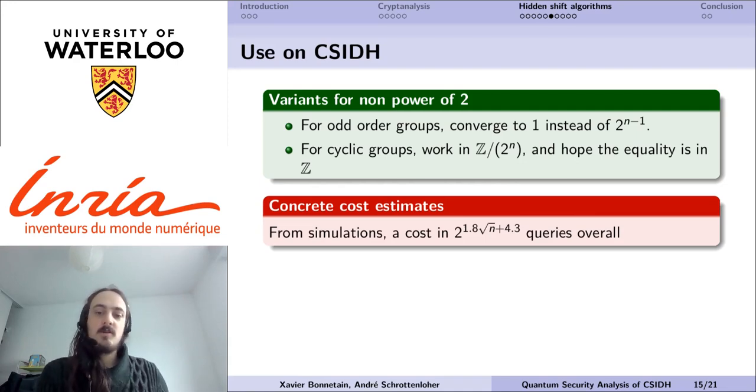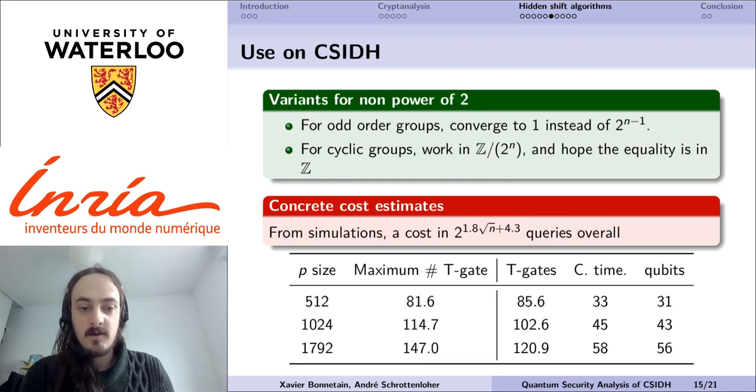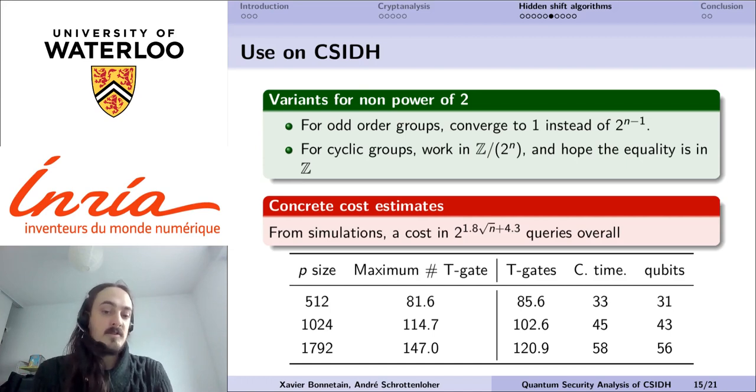Now that we have a query cost, and that we know the cost of the quantum oracle, we can estimate the overall cost of the attack using this variant of hidden shift algorithm, and we can see that for the large instances of CSIDH, the number of required T-gates will be smaller than the number of T-gates required to do a quantum search on the corresponding variant of AES.